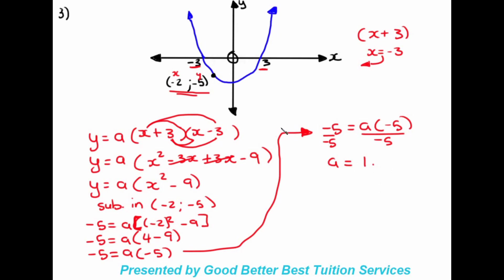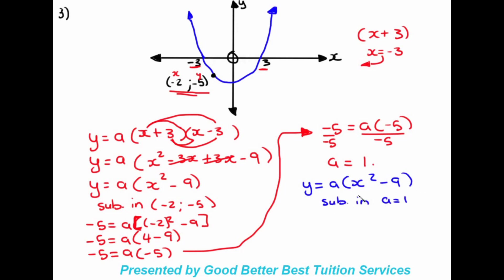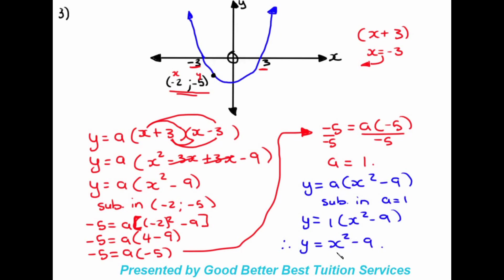Now that we found a, we go back to the equation y equals a times x squared minus nine and substitute in a equals one. So y equals one times x squared minus nine, which simplifies to y equals x squared minus nine. That is the final equation of this parabola. A being positive also confirms that we have a smiley face parabola.